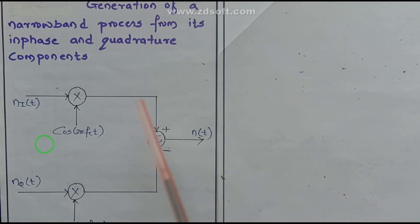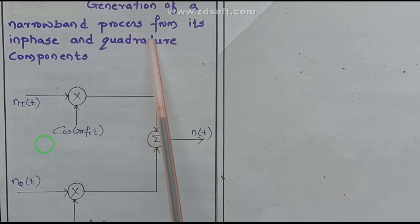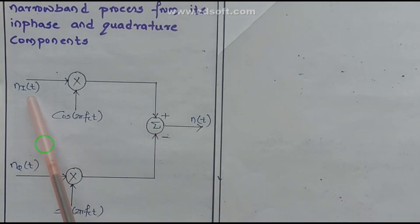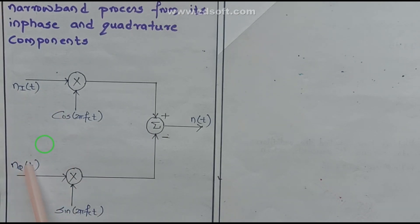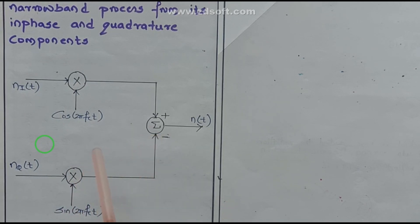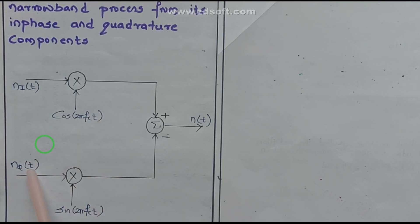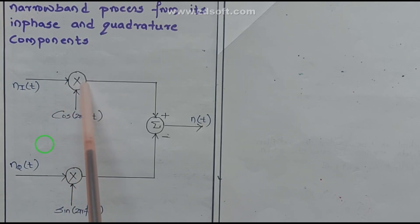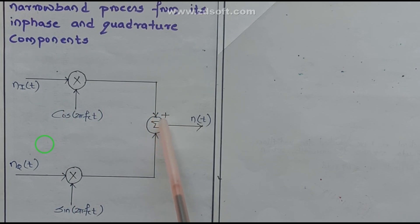Now we are going to see the generation of the narrow band process from its in-phase and quadrature components. The in-phase and quadrature components N_i(t) and N_q(t) are multiplied with the cosine and sine carriers respectively — N_i(t) is multiplied by cos(2πfc·t) and N_q(t) is multiplied by sin(2πfc·t). At the output of the adder, the narrow band process is obtained. This constitutes the narrow band noise synthesizer.